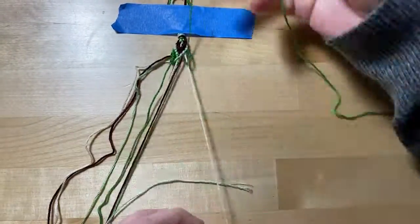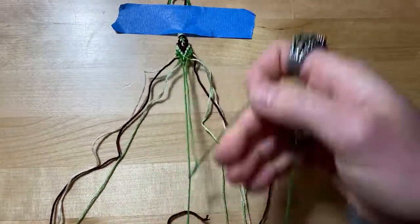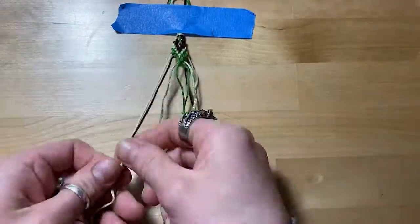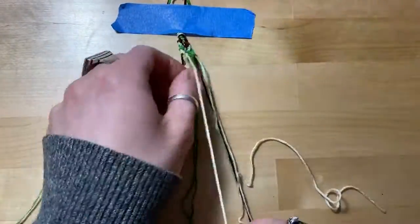This one's a little more complicated because you have to do the backwards knots, but once you get the hang of it, it goes about as quickly as the candy stripe.